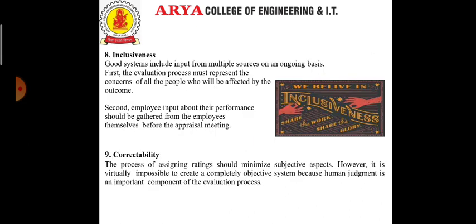The next is inclusiveness. A good system includes input from multiple sources on an ongoing basis. The evaluation process must represent the concerns of all people affected by the outcomes. Employees must participate by providing input on what behaviors and results will be measured and how they will be measured. Additionally, employee input about their own performance should be gathered before the appraisal meeting.